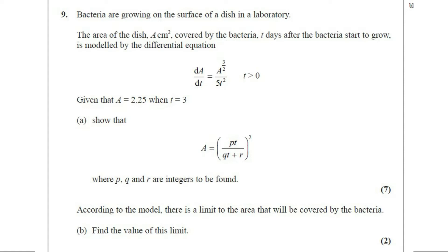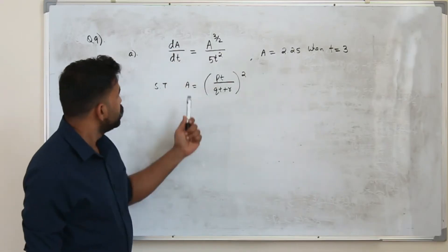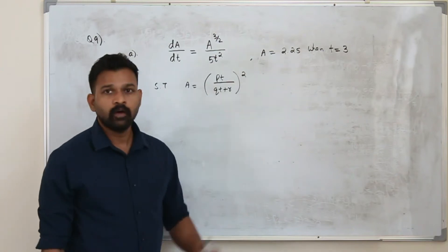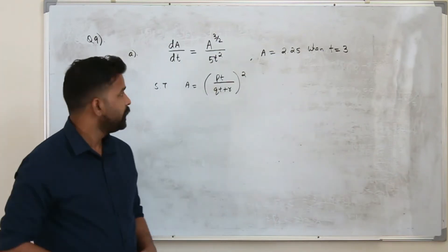Part a show that a equals pt divided by qt plus r whole square. This question carries 7 marks. So you are given this they want you to prove that a is pt upon qt plus r whole square and this p q r are integers.